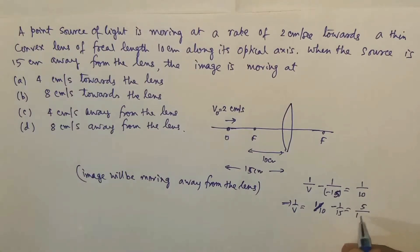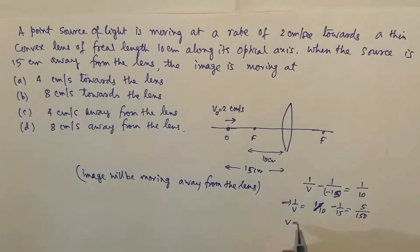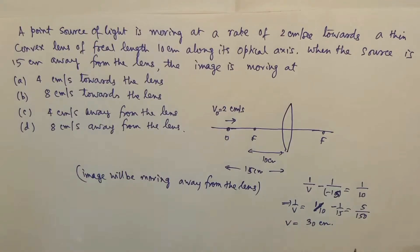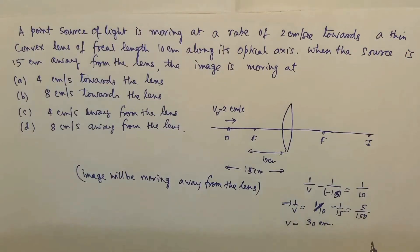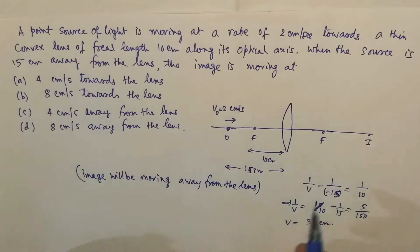So v is equal to 150/5, that is 30 centimeters. So at that moment, the image will be somewhere here, it is 30 centimeters from the lens.